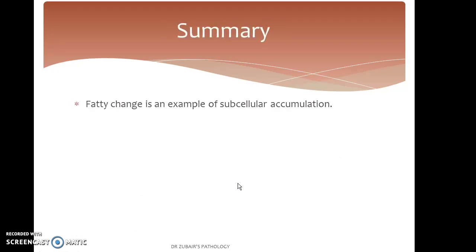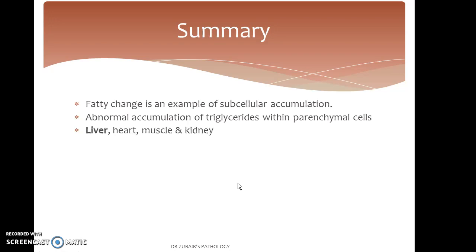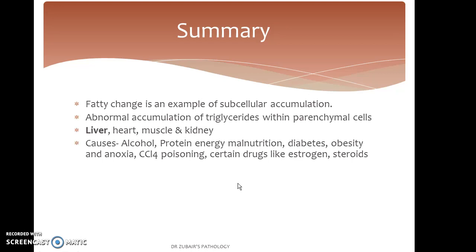To summarize: fatty change is an example of subcellular accumulation. Abnormal accumulation of triglycerides within parenchymal cells occurs, commonly seen in the liver, but also seen in heart, muscle, and kidney. Causes include alcohol, protein energy malnutrition, diabetes, obesity, anoxia, carbon tetrachloride poisoning, and certain drugs like estrogen and steroids.